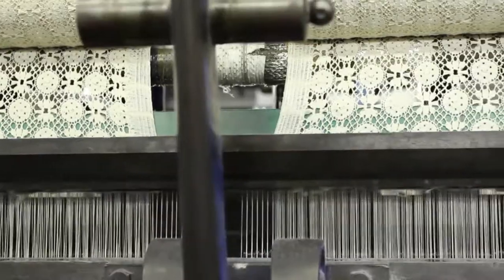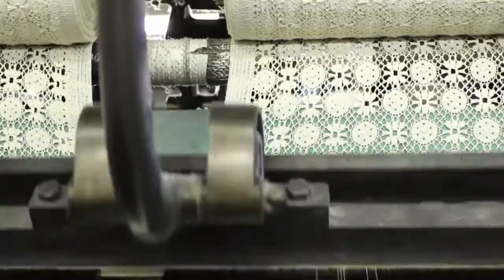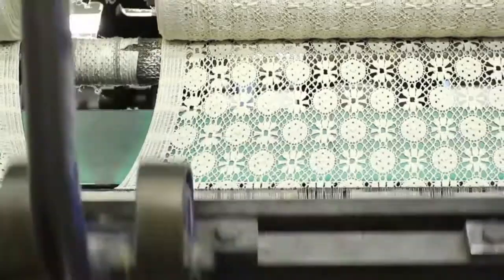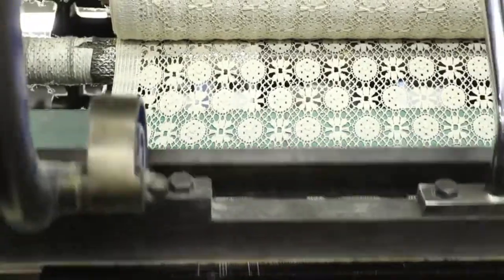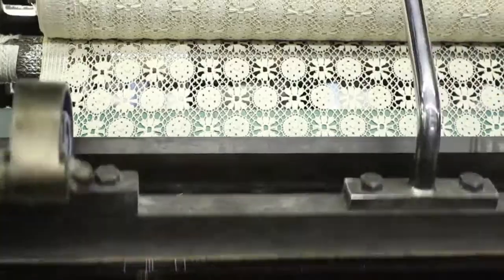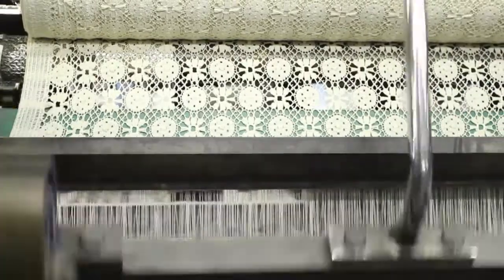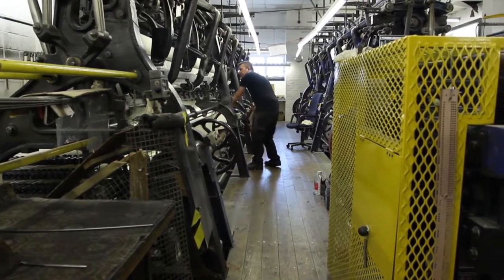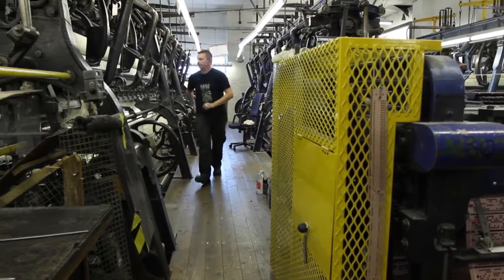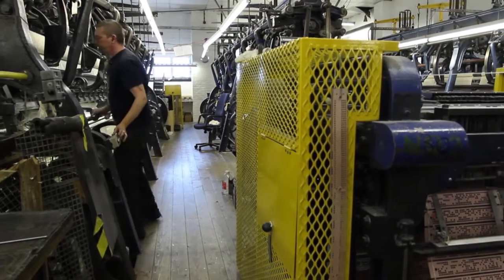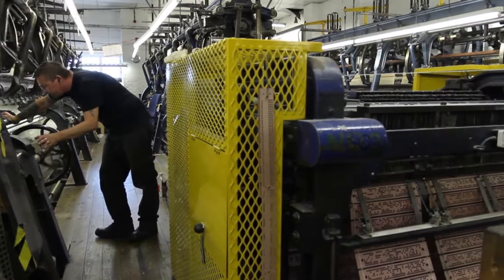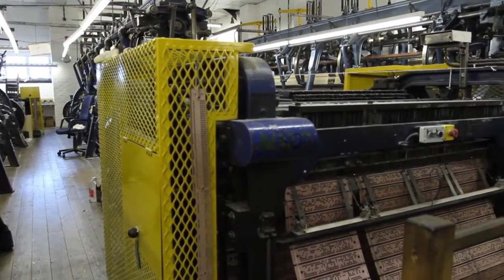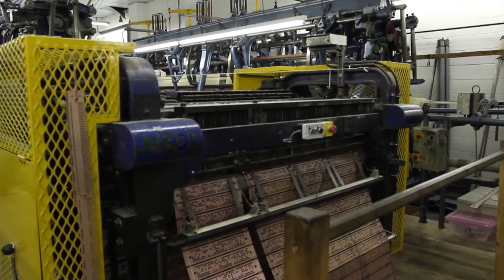This film draws on work done at Nottingham Trent University to understand part of this industry that continues in a single factory in Ilkeston, Derbyshire, making patterned lace by machine. This lace will be used in high fashion garments. The film shows the complexity of the process, the assemblage of human and mechanical actions that are involved in producing lace. It is about the relationships involved between the workers, between the workers and the machines, between the parts of the process.